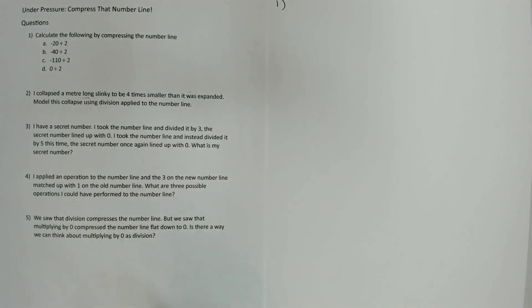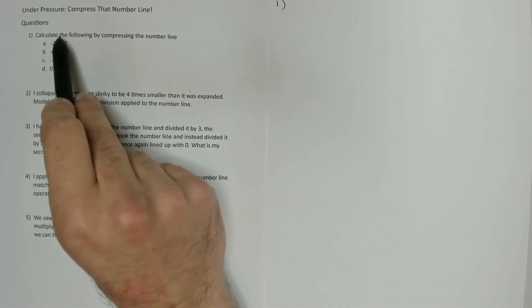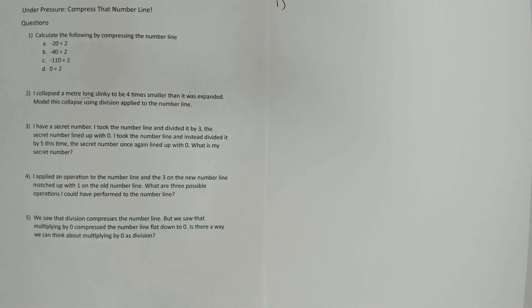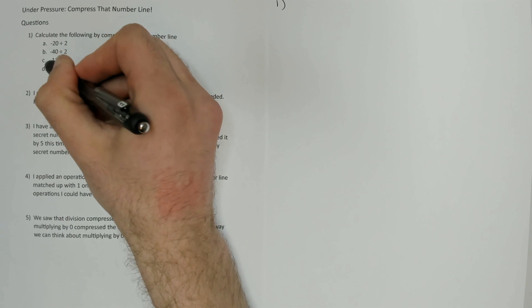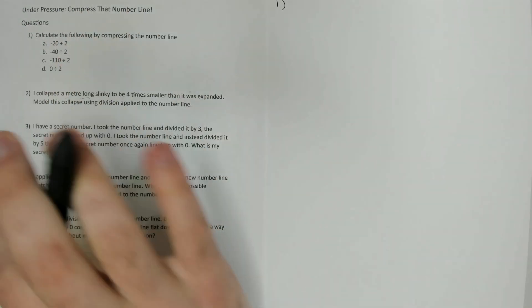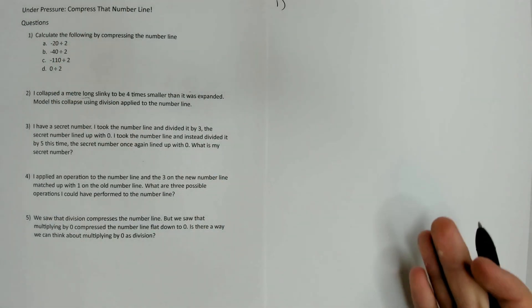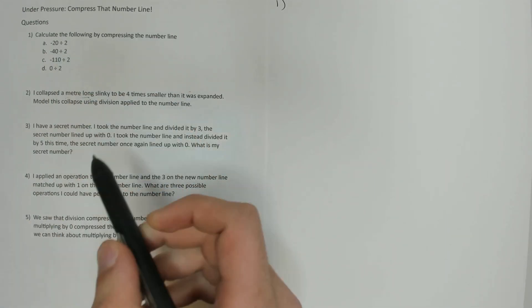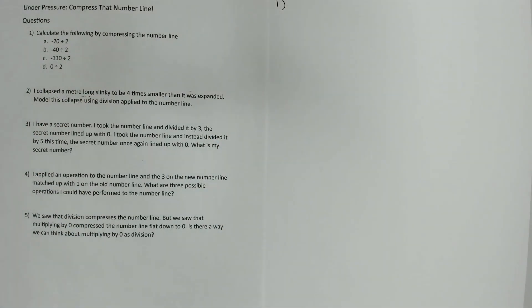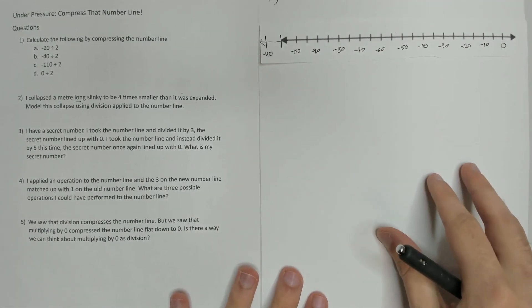Number one: calculate the following by compressing the number line. All of these are being divided by 2, which means we're going to be compressing the number line by 2, or dividing it by 2. We also see that we have a 0 here, but the rest of these are all negative, which means we have no need for positives. So we can just have our number line be to the left of 0. Furthermore, these values get quite large — they go to 110 — so we're going to want to label our number line using multiples of 10.